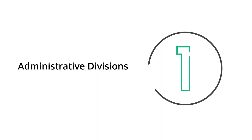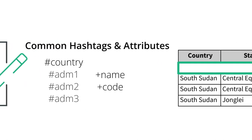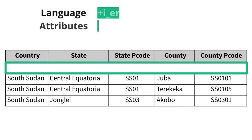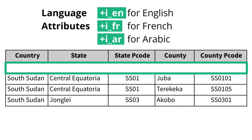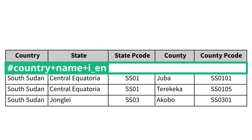One common type of location information is administrative divisions. There are a handful of HEXL hashtags and attributes used to describe this type of data. For a data column with the name of the country, you would use the country hashtag and name attribute to describe it. You can add a language attribute if you want to be specific about the language used. In our example, South Sudan is written in English, so we could add the attribute i_EN, the English language attribute.